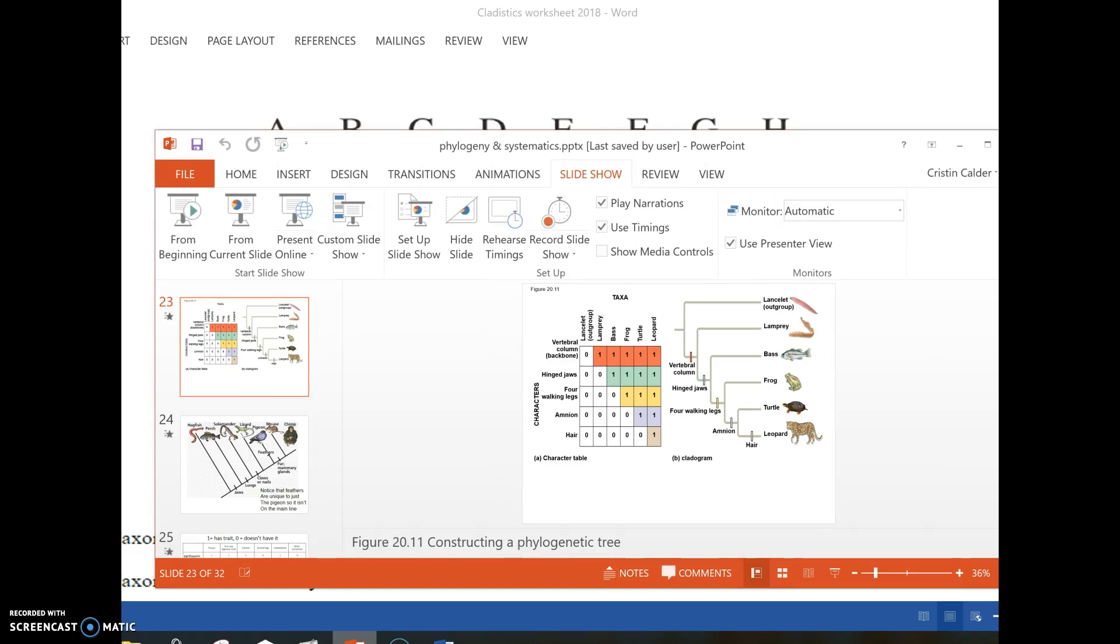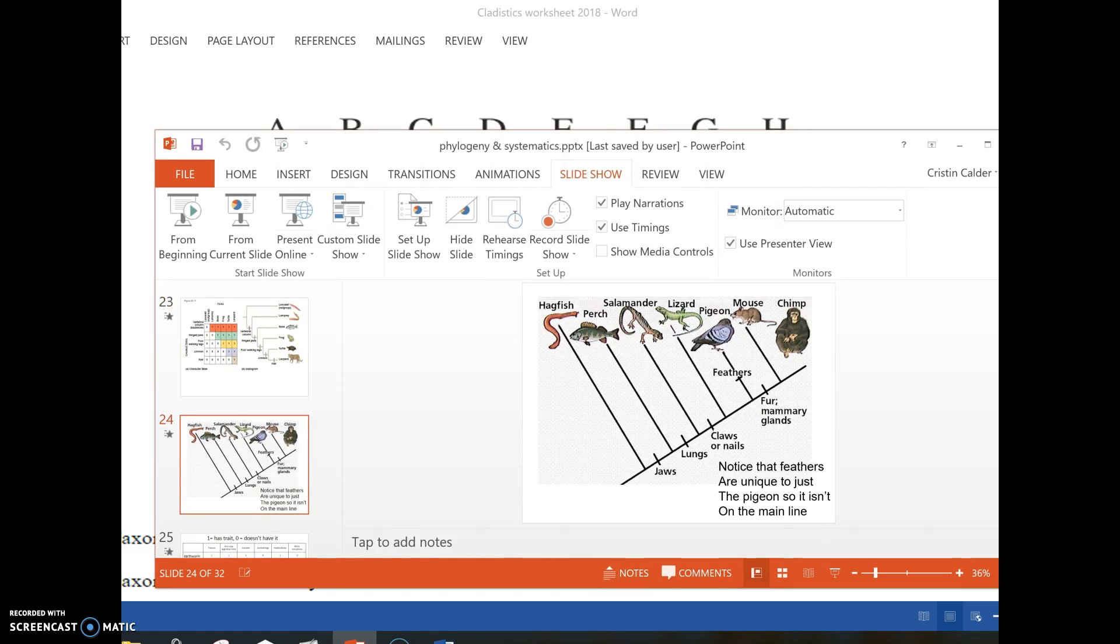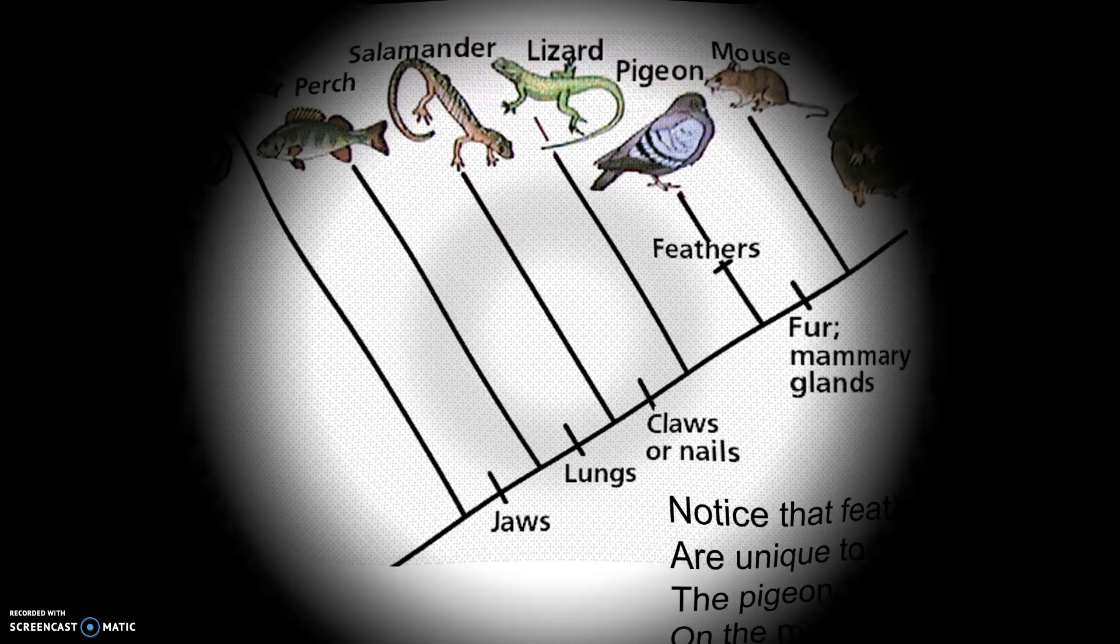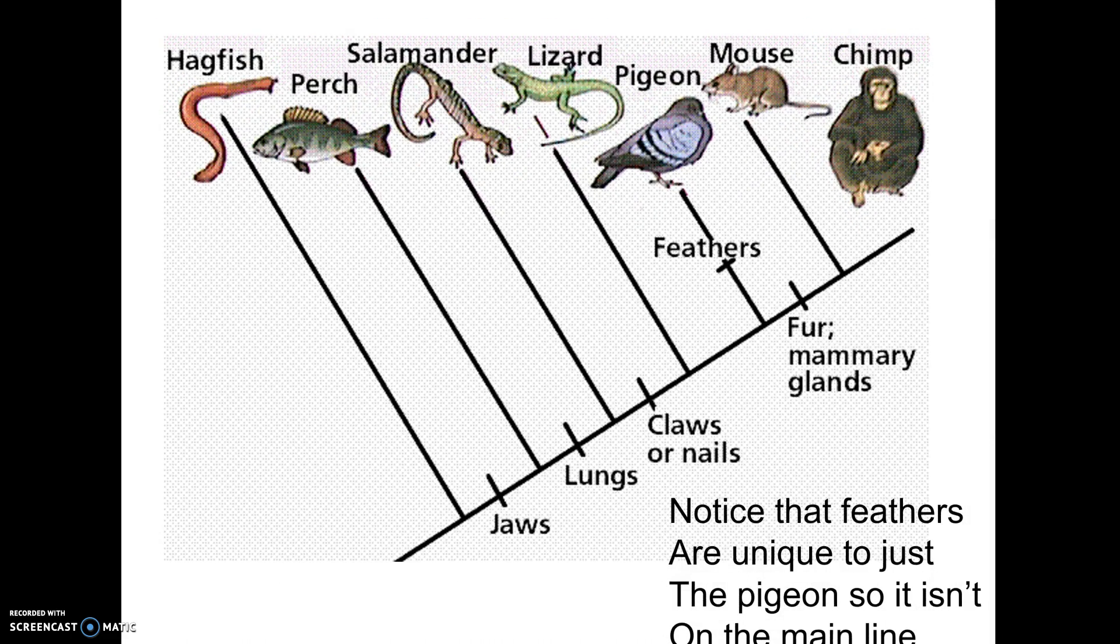Now, going back to our PowerPoint. So here's another picture of a cladogram. Again, the hagfish in this one is an outgroup. He's the most primitive. And then after him, you can see that everybody has jaws. And then the perch is here. Then everybody past the perch has lungs.